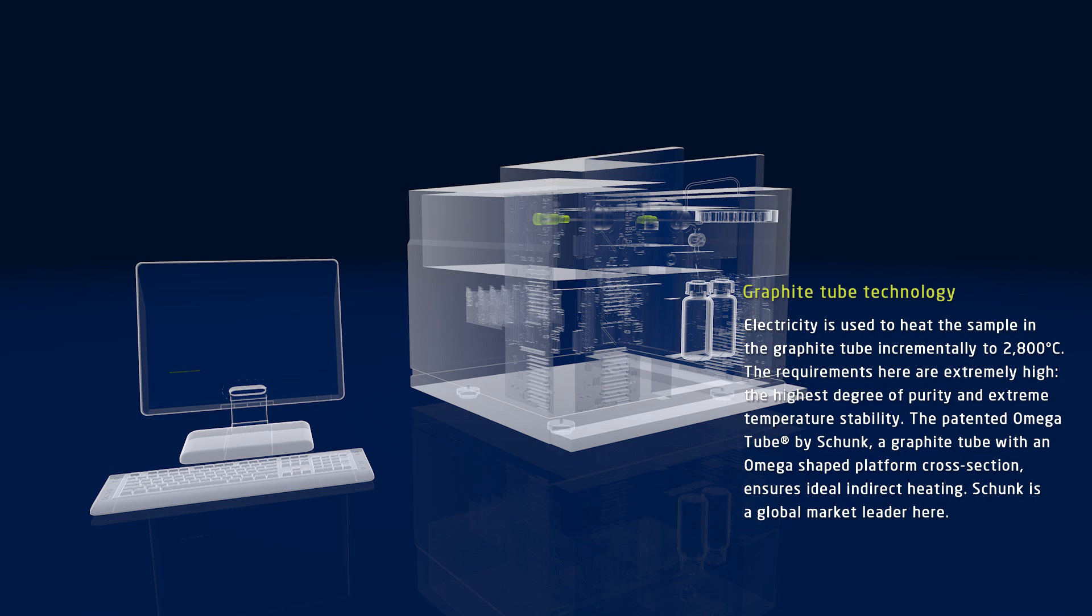The patented omega tube by Schunk, a graphite tube with an omega-shaped cross section, ensures ideal indirect heating in this case. This is why graphite tubes by Schunk are used all over the world.